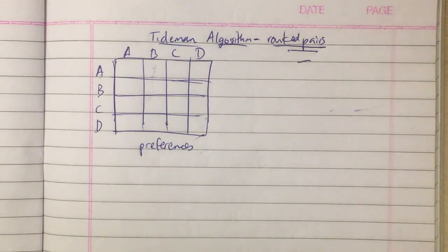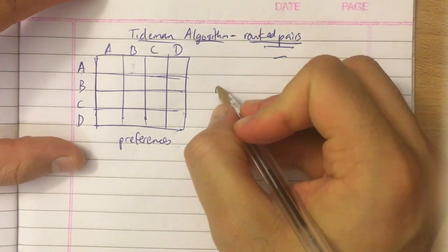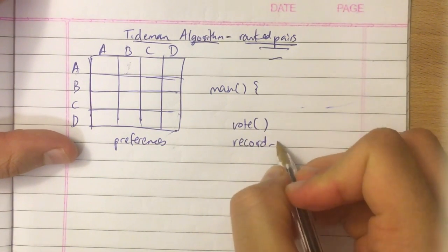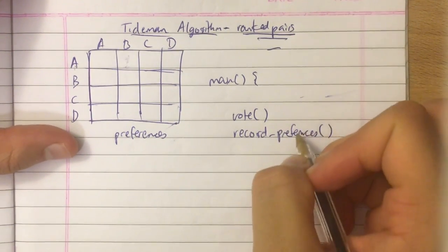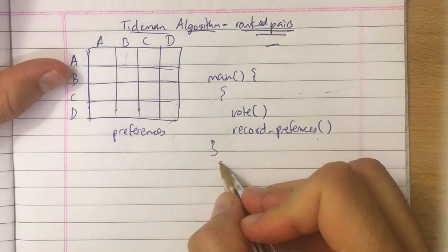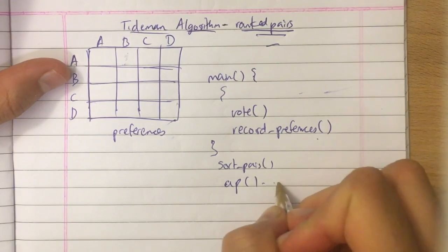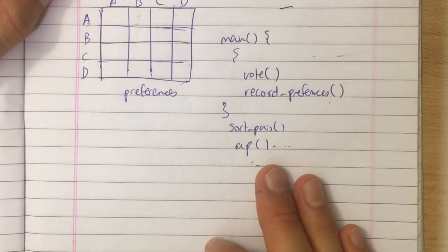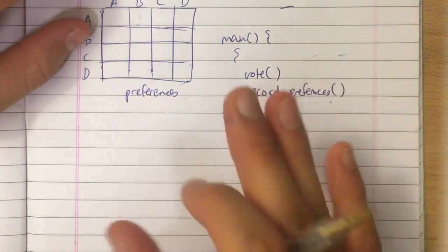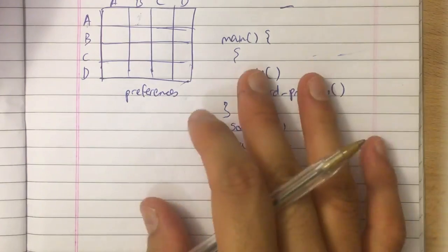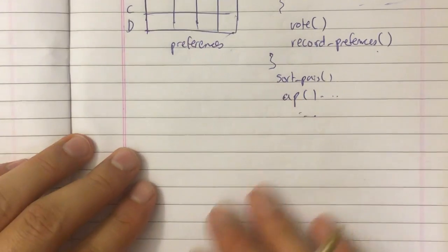We have our candidates array as usual, plus new variables like pair_count and candidate_count. This is a pretty challenging problem. There are only one or two challenging functions to write; the others are not too bad. Let's go through them one by one.